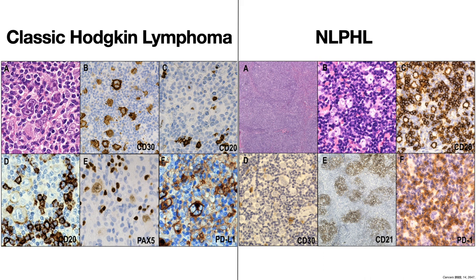In figure B, the Hodgkin Reed-Sternberg cells are universally positive for CD30. In figure C, they are negative or weakly positive for CD20, because in classic Hodgkin lymphoma the B cell program is hijacked by the neoplastic cells and is not intact. In figure E, Hodgkin Reed-Sternberg cells show the signature weak PAX-5 staining.